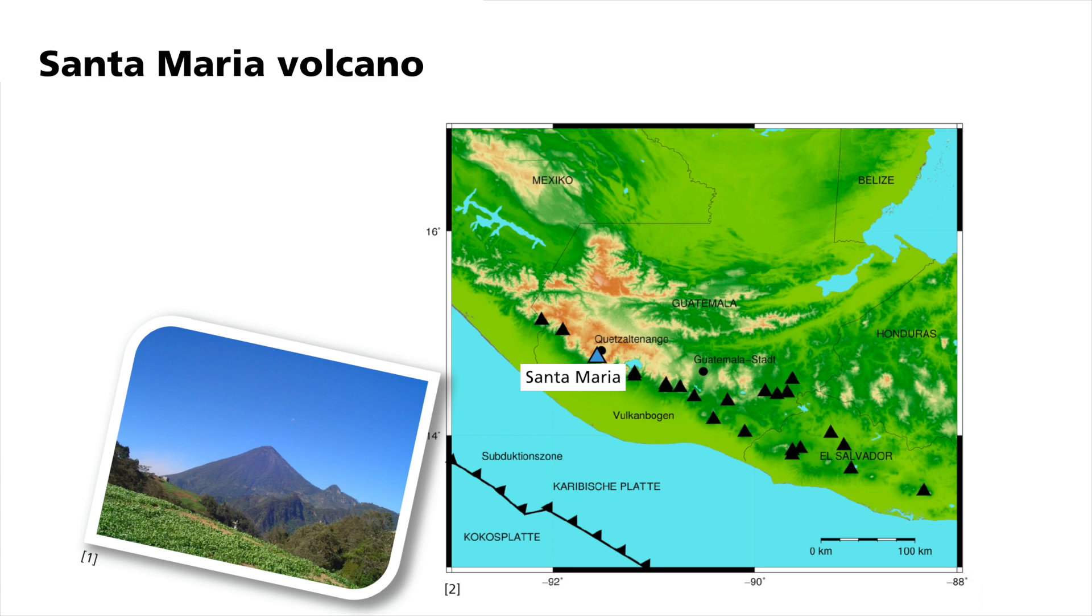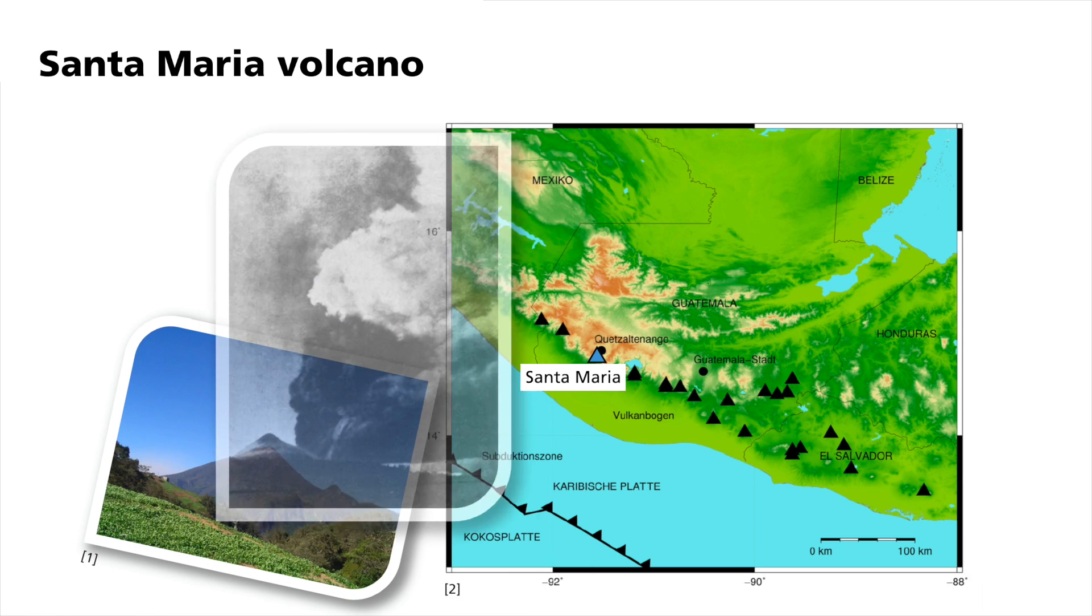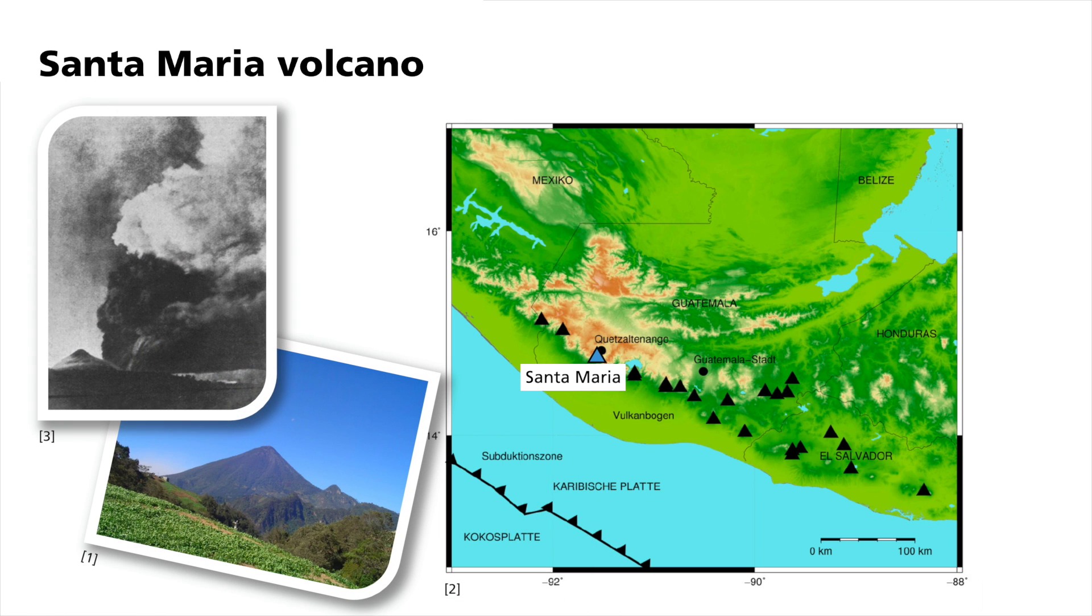In 1902, an extremely strong eruption of Santa Maria occurred. Within two days, 5.5 cubic kilometers of magma were ejected. This corresponds to about 2,500 times the size of the Olympic Stadium in Berlin or about one million gymnasiums. This made the eruption of 1902 the third strongest in the 20th century worldwide.